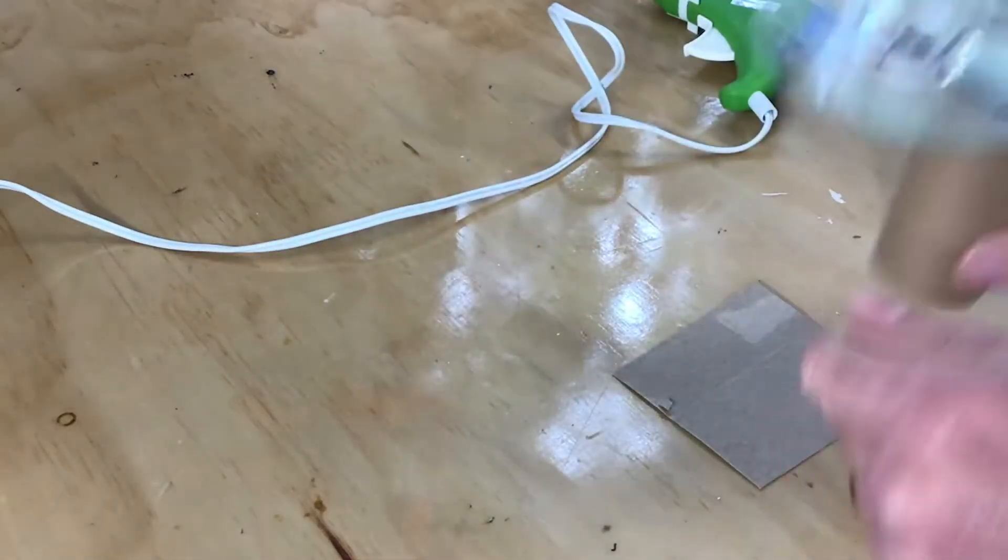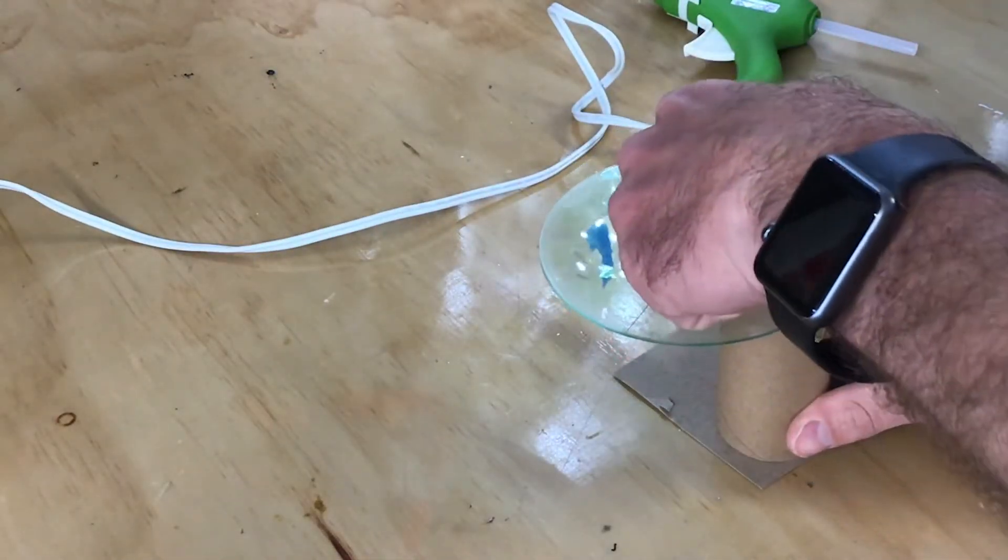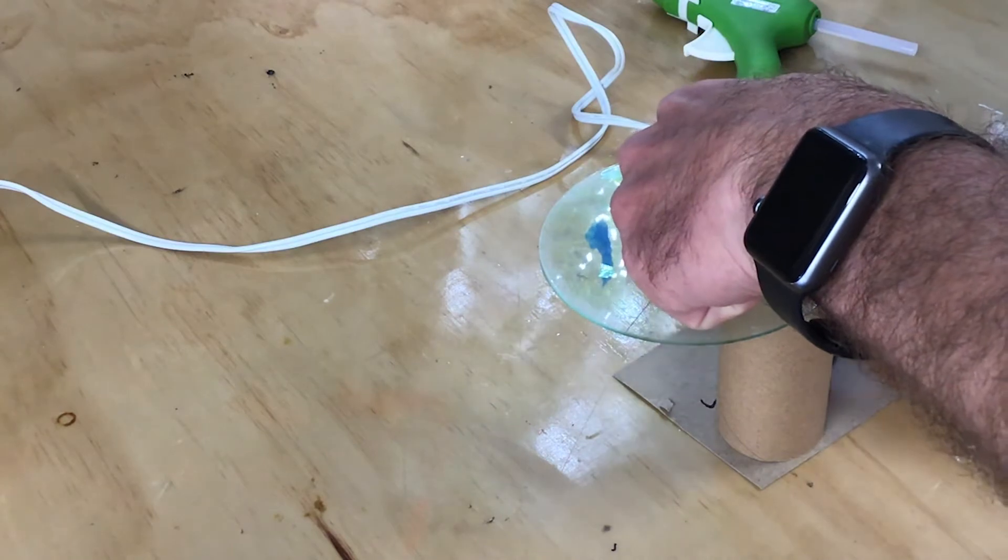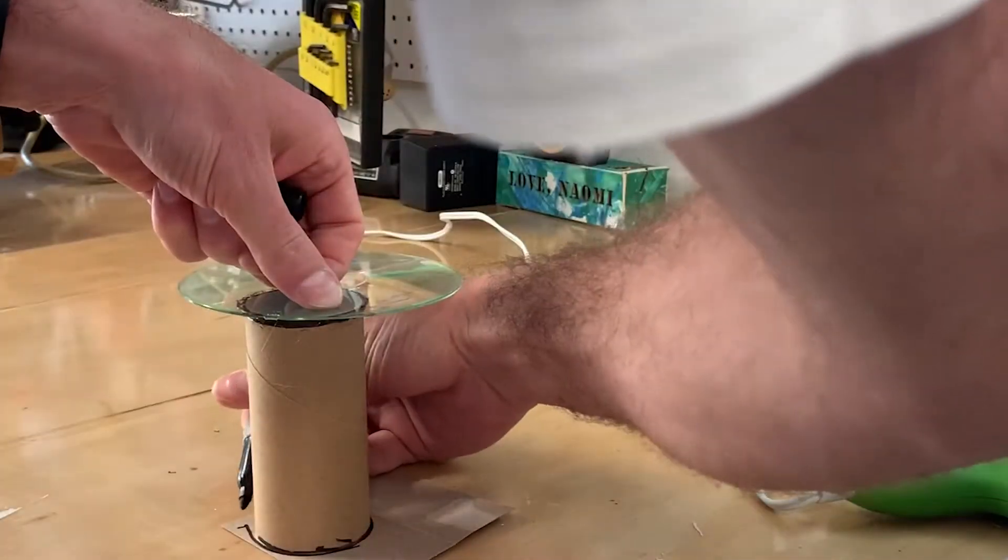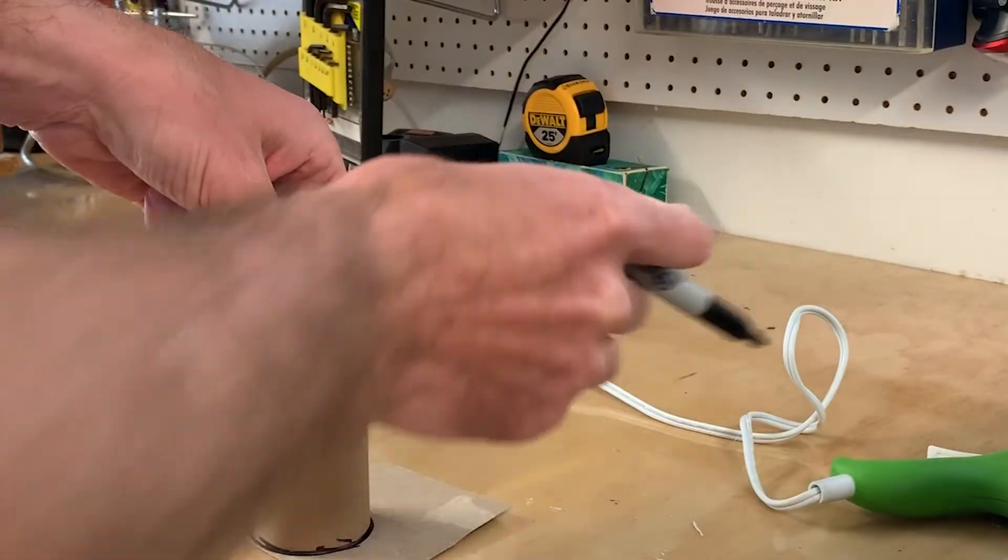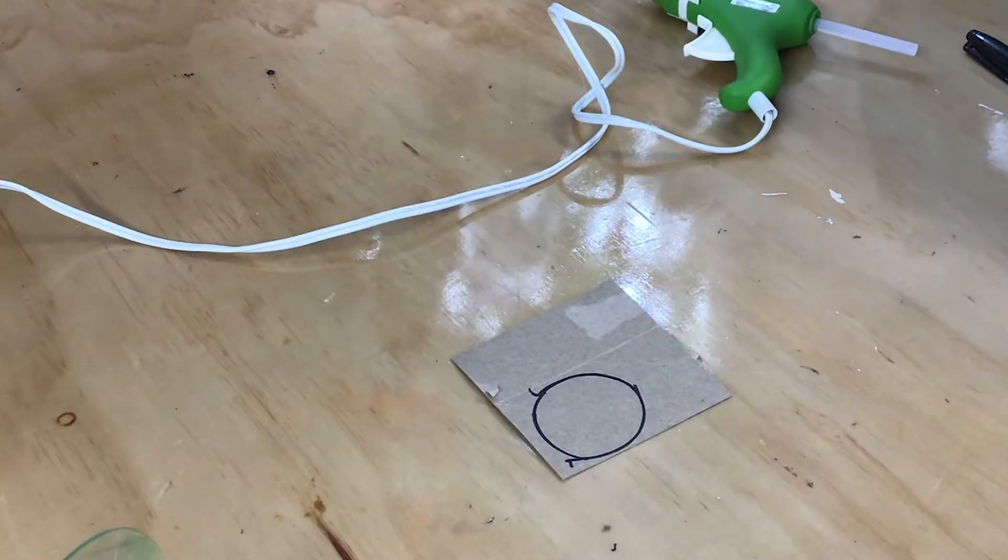Next you're going to take your thin piece of cardboard and trace another circle on there. This is the slit end of the spectroscope. We're going to be cutting a very thin slit for light to come through.